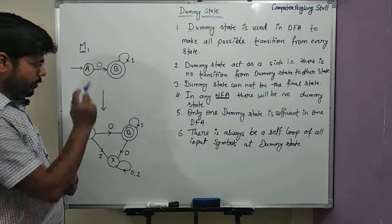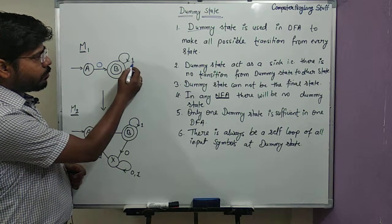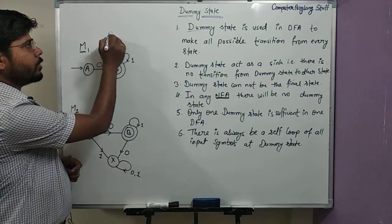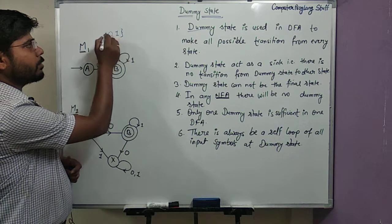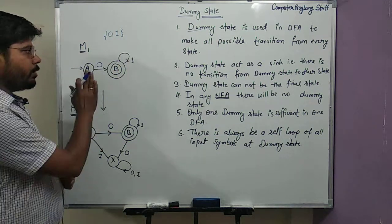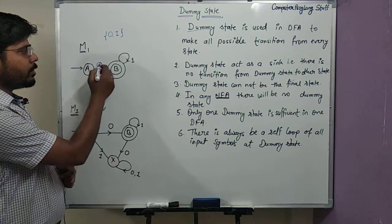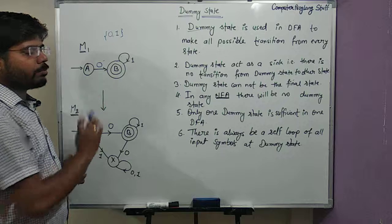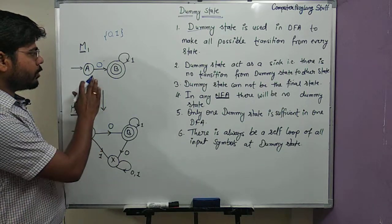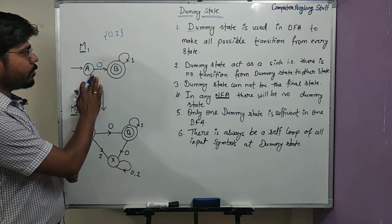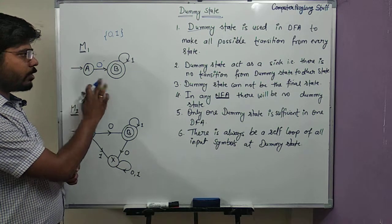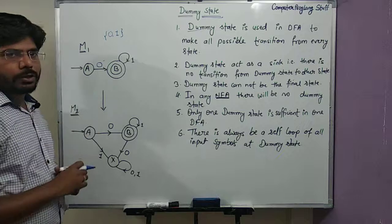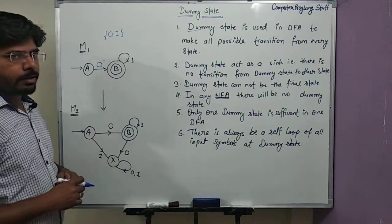We have a self-loop of 1 at state B. So there are two input symbols, 0 and 1, in this machine. From state A we have only a transition for symbol 0, and from B we have a transition only for symbol 1. So there is no transition for 1 from A, and no transition from B on 0. So this is an incomplete DFA.